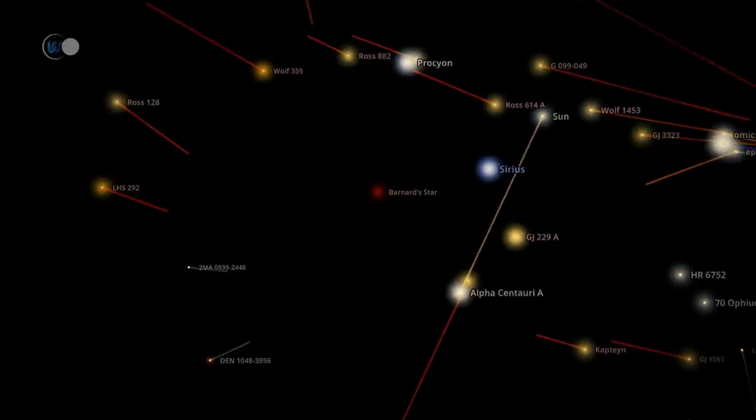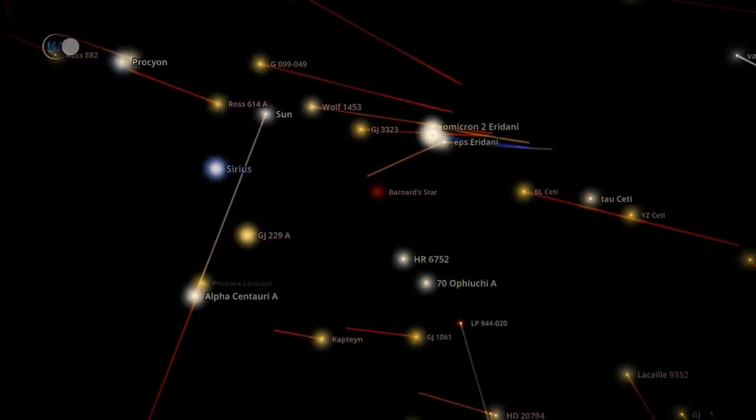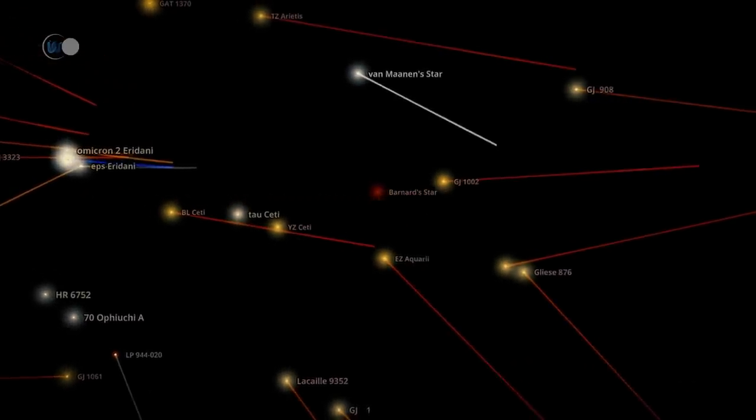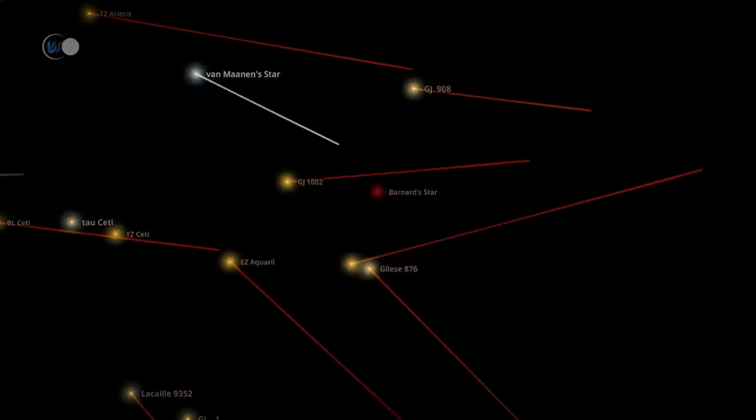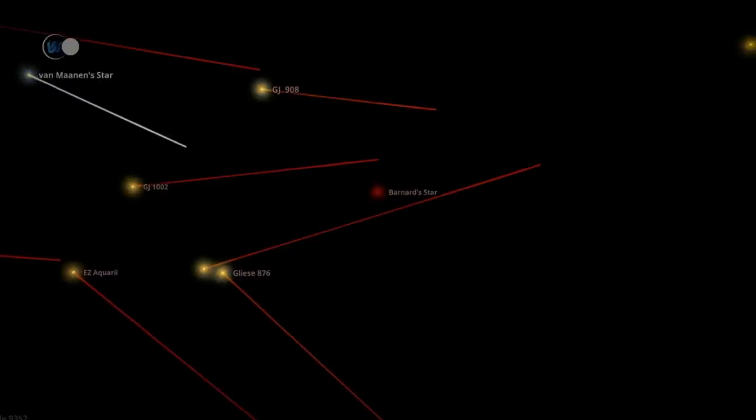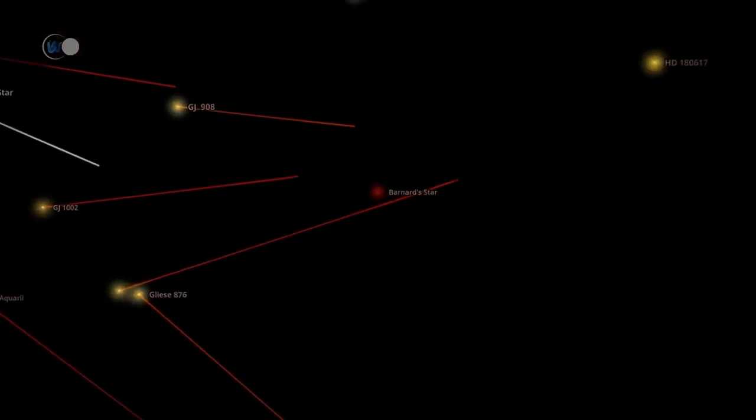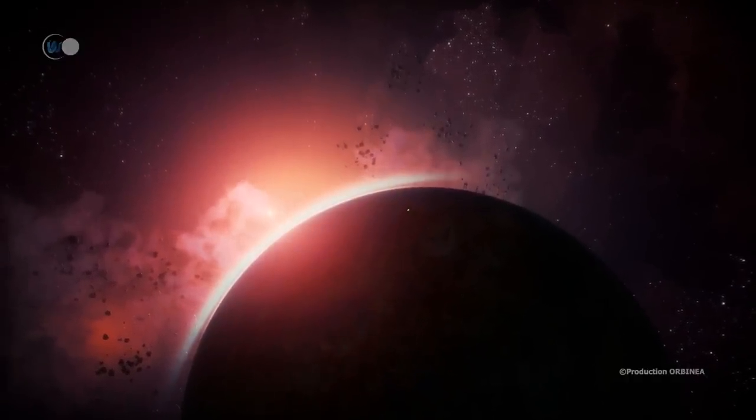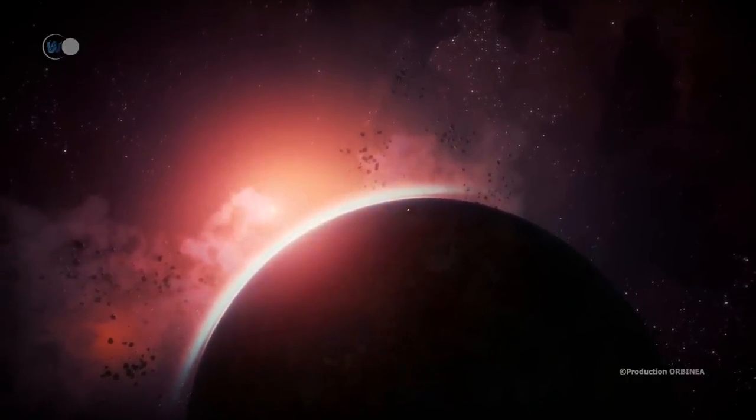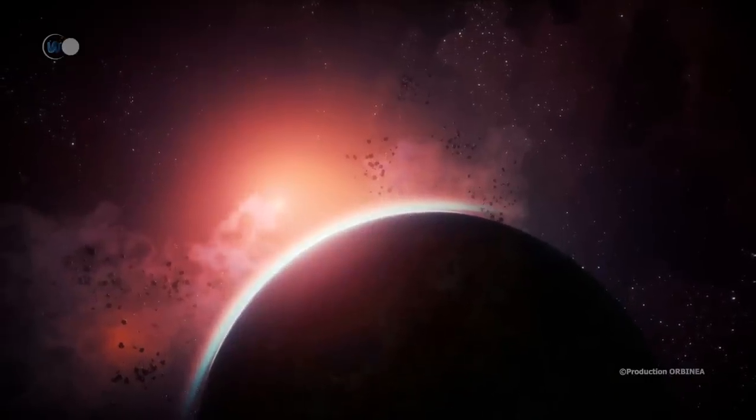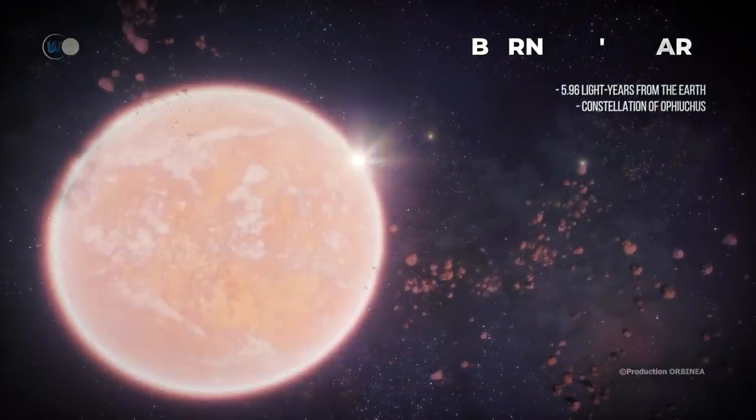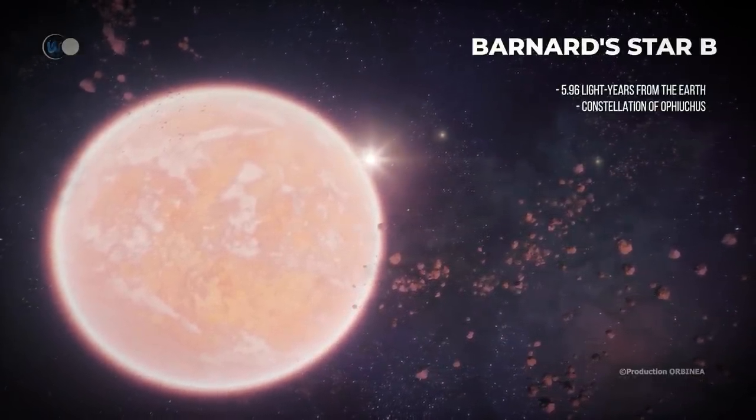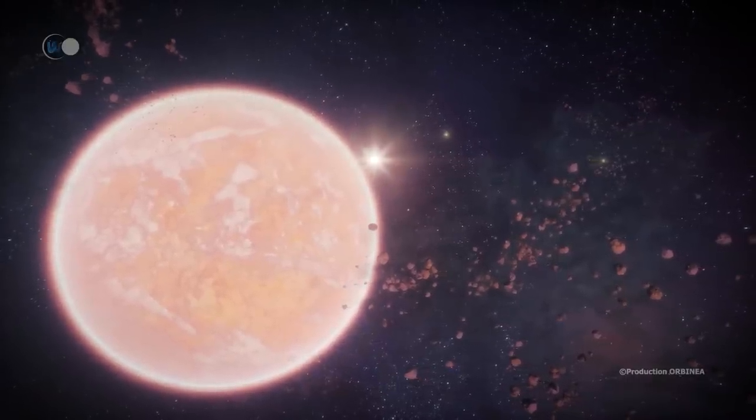You are probably wondering why we are visiting Barnard's star. Why are we interested in this isolated star that doesn't seem to belong to a system? In fact, Barnard's star is a small planetary system. This star, which has monopolized planet hunters for several decades, has been the subject of more than 770 observations. Astronomers saw their efforts rewarded in 2018. An exoplanet does orbit near Barnard's star. It is Barnard's star B, also known as the planet Barnard B.